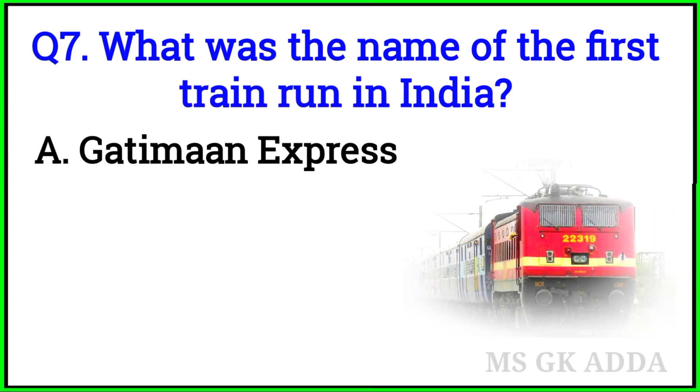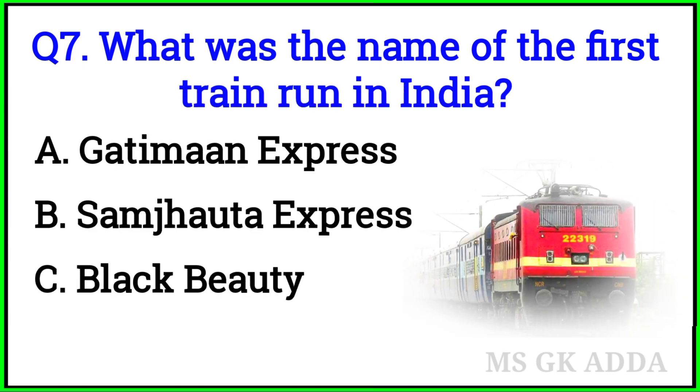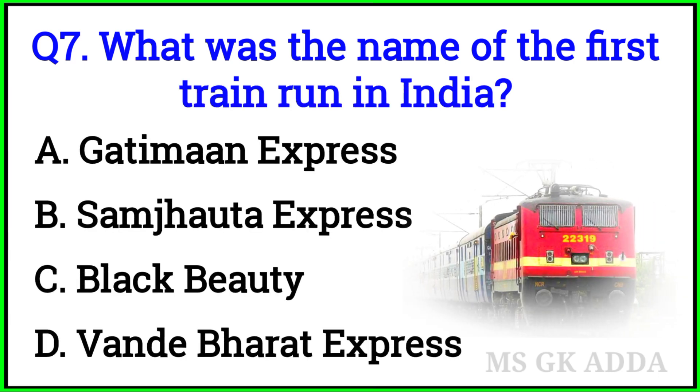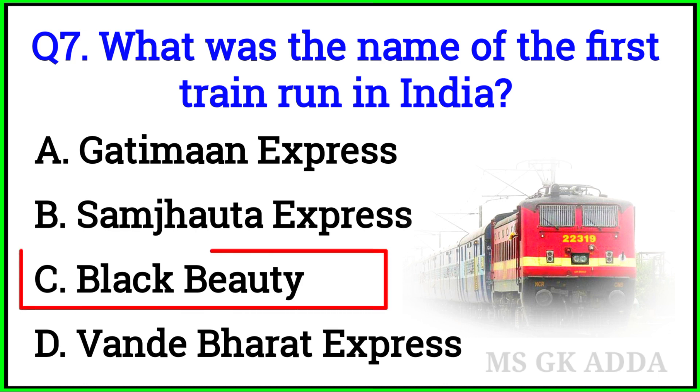Question 7: What was the name of the first train run in India? Option C — Black Beauty.